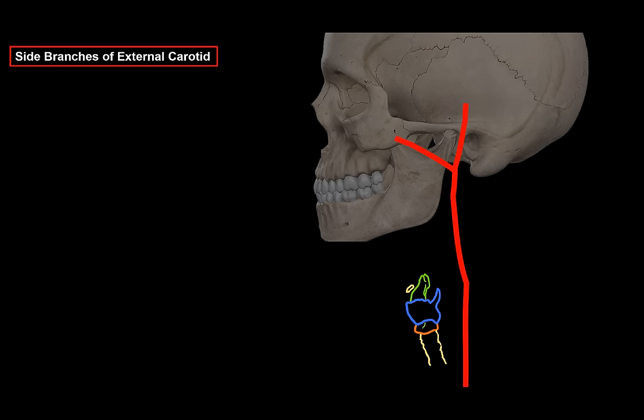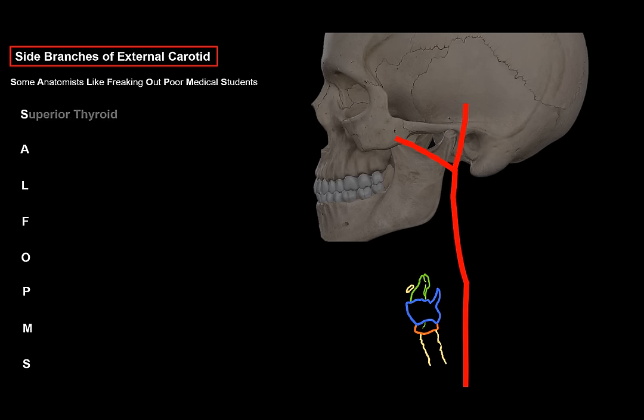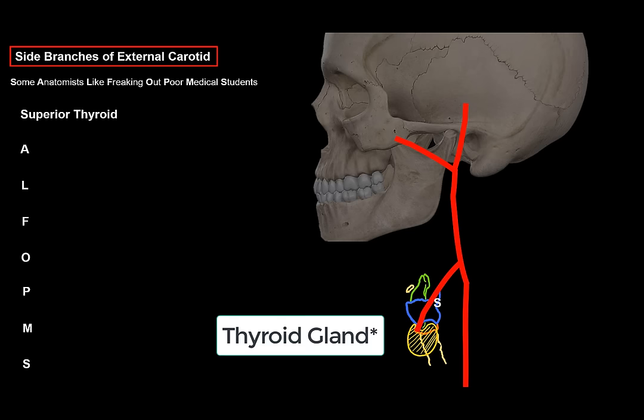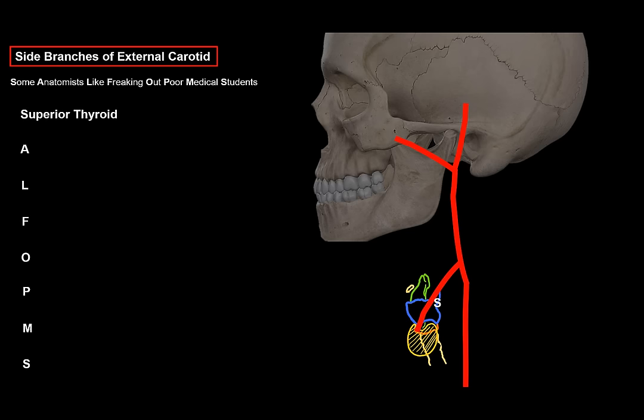A mnemonic for the side branches of the external carotid is: 'Some Anatomists Like Freaking Out Poor Medical Students.' The first branch is the superior thyroid artery, one of three arteries coming out from the anterior side of the external carotid. It begins at the level of the hyoid bone and then descends to the thyroid cartilage to supply it from the superior side — that's why it's called the superior thyroid.